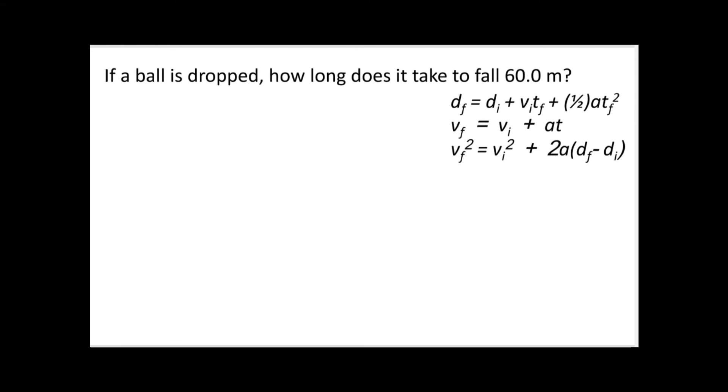So this one is a free fall problem, and sometimes students will freak out because this says, if a ball is dropped, how long does it take to fall 60 meters, right? So people go, well, I got 60 meters, but there's no other numbers in this problem. How the heck am I supposed to solve this? And so there's a couple things that we know here that they expect you to know. Because we're dropping the ball, it's falling with gravity, so that means our acceleration is going to be gravity, which is 9.8.